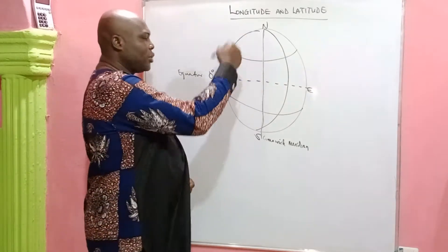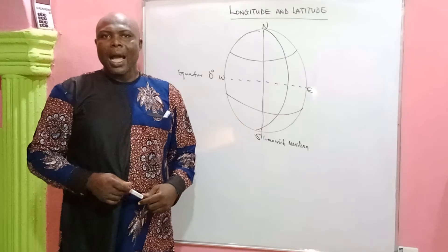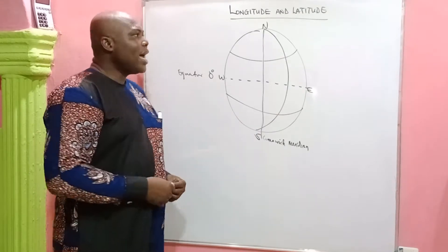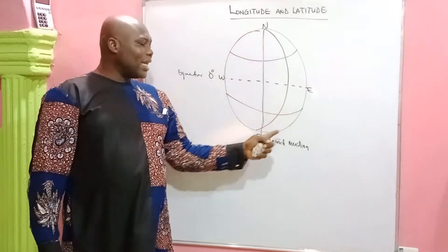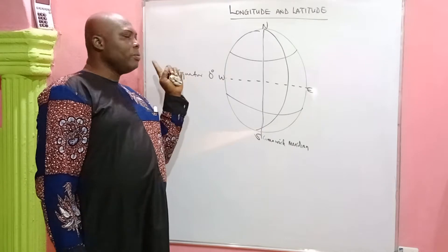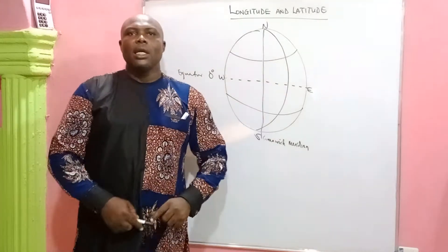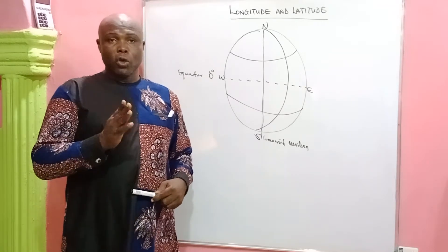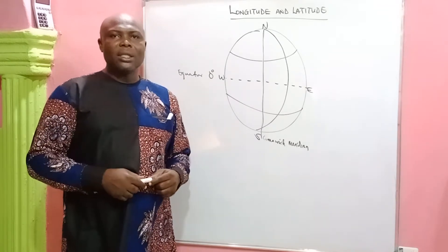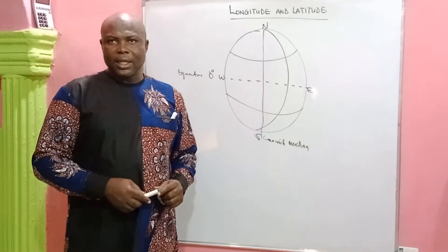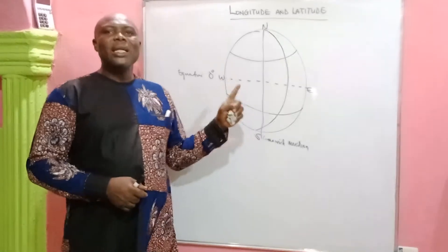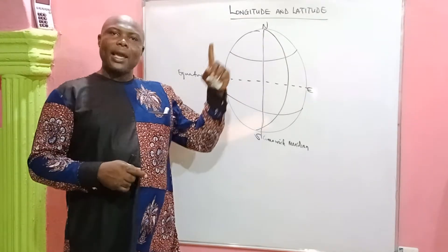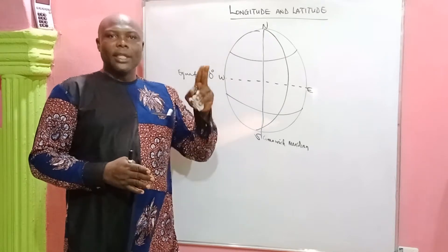The Earth is spherical in nature, as you have seen in this diagram, and there are imaginary lines that run around the Earth. Some of them run from the northern to the southern hemisphere, while some run from the west to the east. It is with the help of these lines that objects fly around the Earth — aeroplanes fly through these lines to get to their destinations, and they maintain these lines during their course of travel. That is why you hardly find an aeroplane colliding with another aeroplane in the air, because they have their unique lines they fly through.